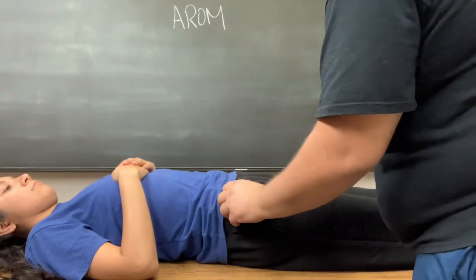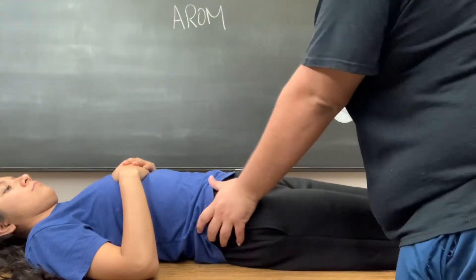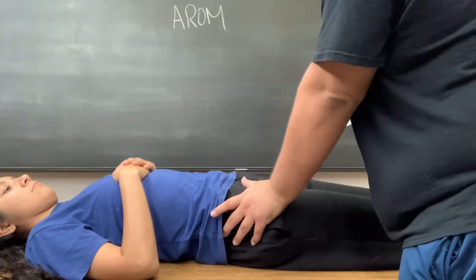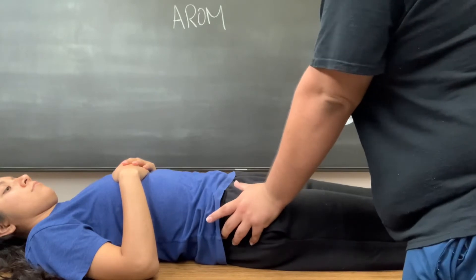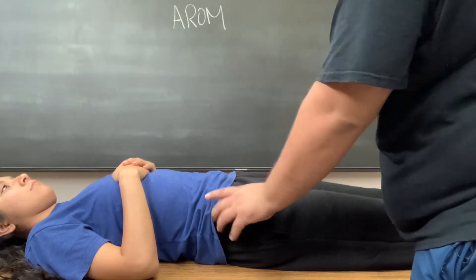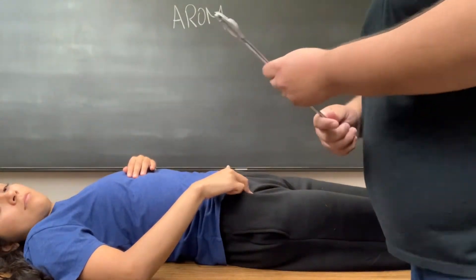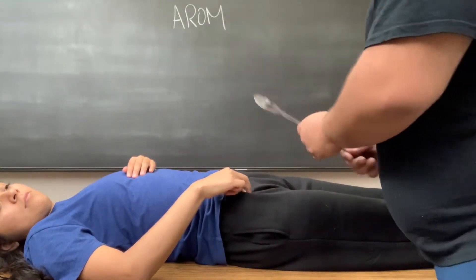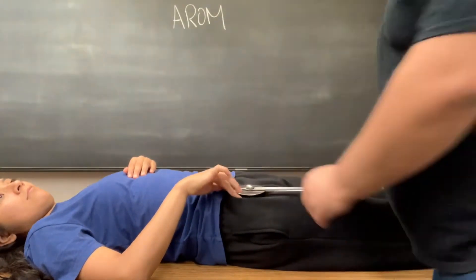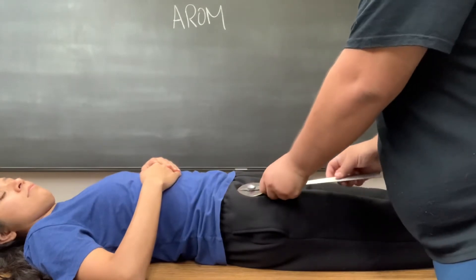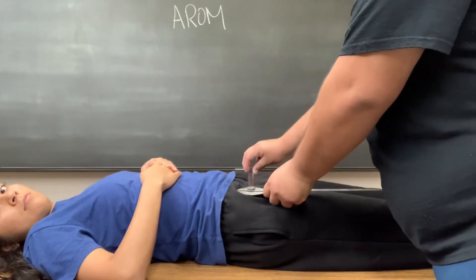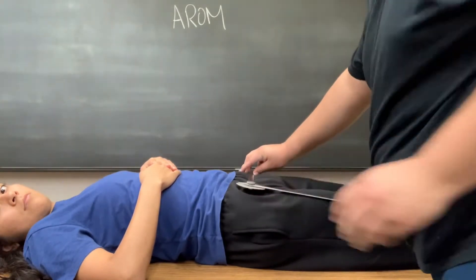In order to perform abduction, we are going to locate the ASIS. The ASIS is right here — we use our hypothenar eminence to find it; it's the bony landmark right here. We will have the patient hold the place, put the fulcrum right over the ASIS, and have the stationary arm contralateral to the other ASIS.